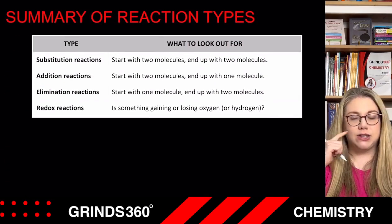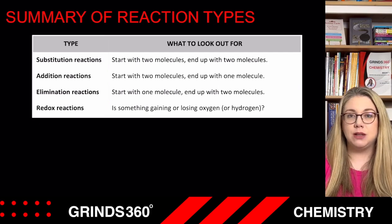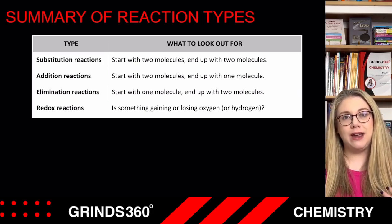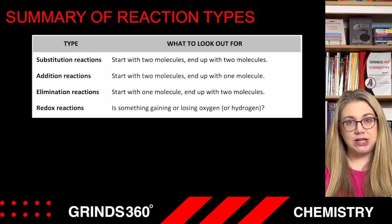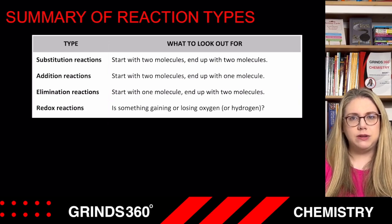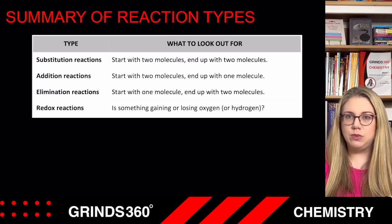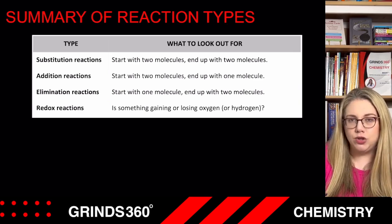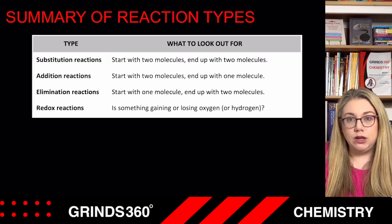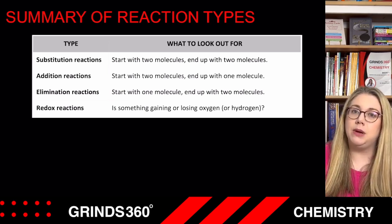Now the summary table of the types of reactions. There are four different types of reactions that you have to be able to identify at Leaving Certificate level. This summary table is basically a cheat guide for when you're looking at a reaction — how do you figure out what type it is? You're not going to use this informal language in the exam. If asked to explain how you know it's an addition reaction, you'll use language like 'an unsaturated reactant reacting with a molecule, and that molecule added on to the unsaturated compound.' This does come up in the exam and is worth a minimum of three marks.